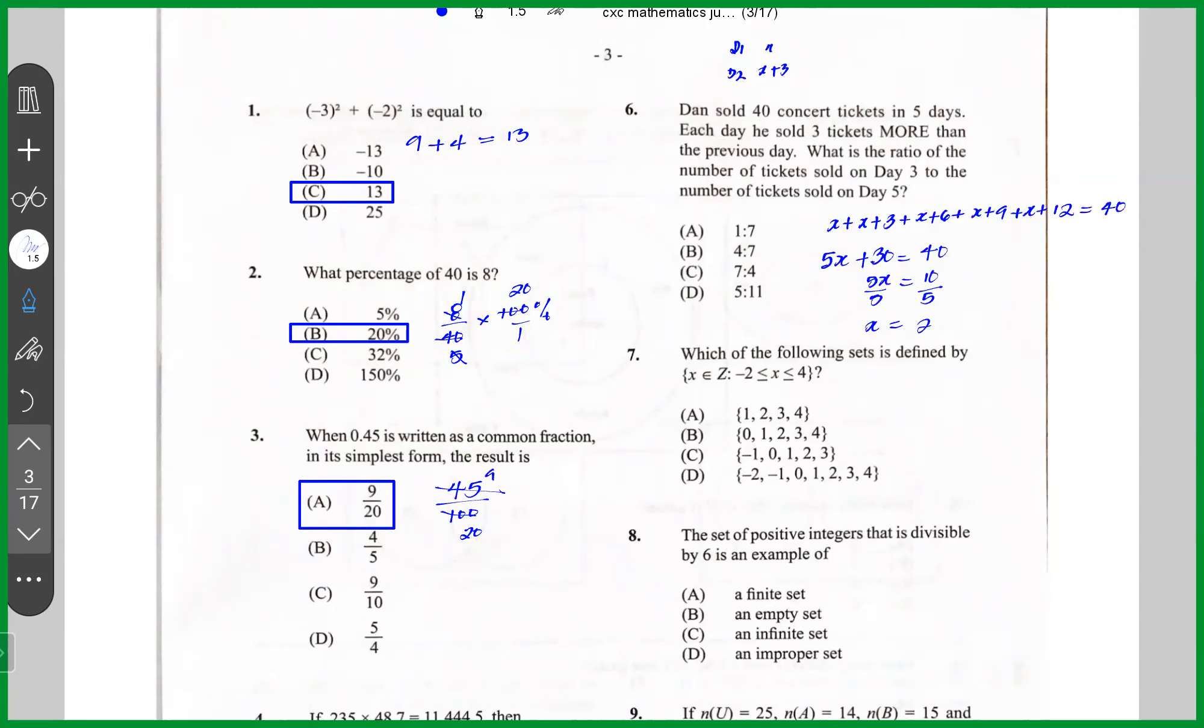So he said, how much tickets did he sell on day three? The ratio of day three to day five. On day three, he sold X plus six. So the ratio of day three to day five would be day three is two plus six. Day five, it's two plus 12. So this would be eight to 14, which is the same as saying four to seven. The answer is B.